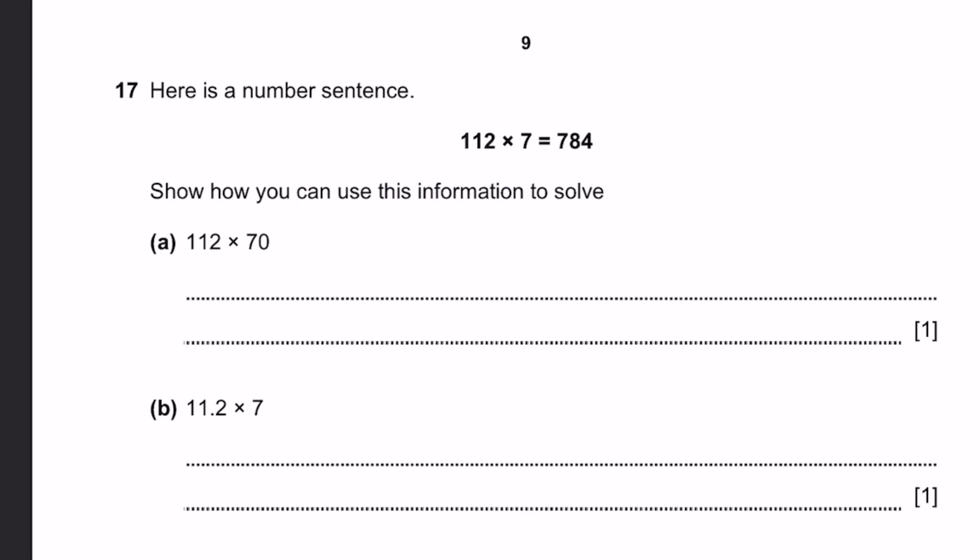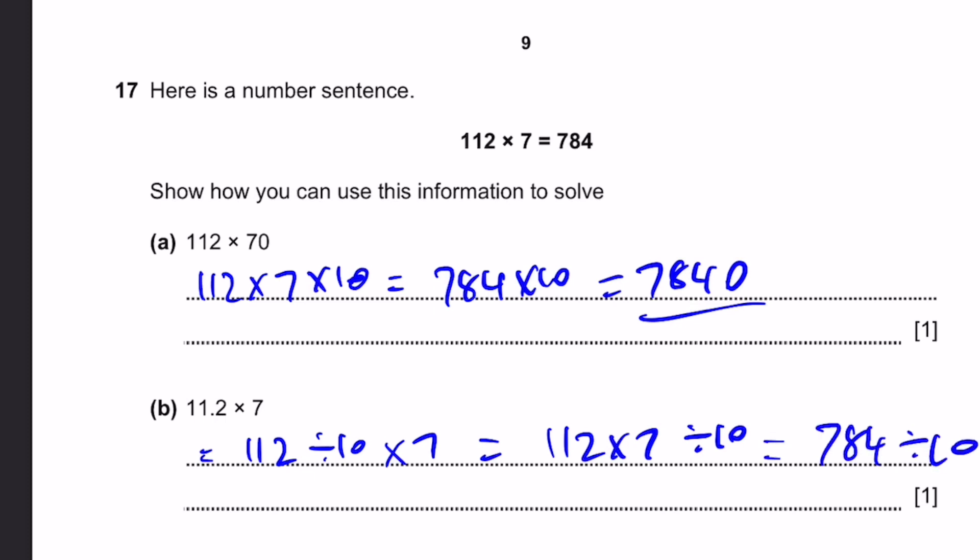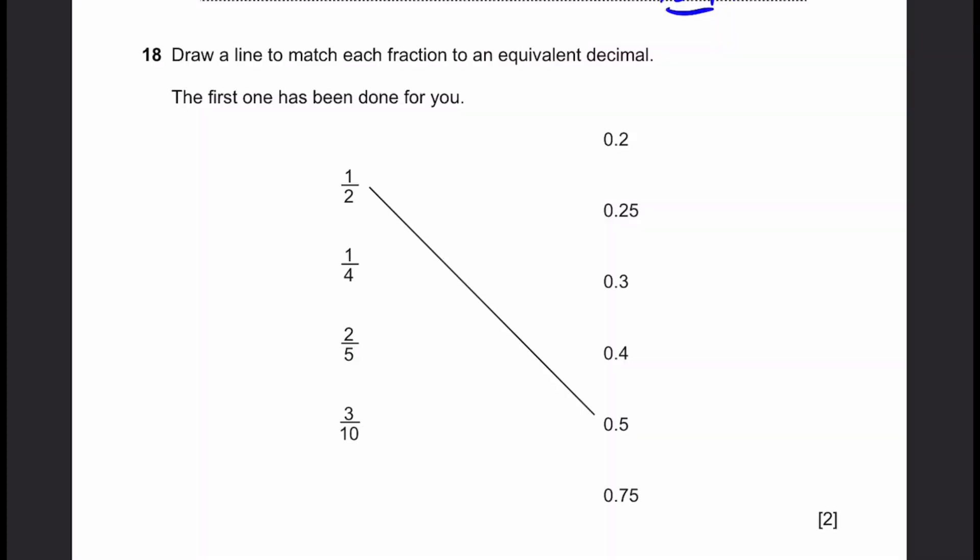Question 17. Here's a number sentence. I can use this information to solve 112 into 70 with 112 into 7 is 784. 70 is simply 7 into 10, so 112 into 7 is 784. That would equal 112 into 7 into 10, which is 784 into 10, and that would be 7,840. Part B, 11.2 into 7 would equal 112 divided by 10 into 7. That would be 112 into 7 divided by 10, which equals 784 divided by 10, which is 78.4.